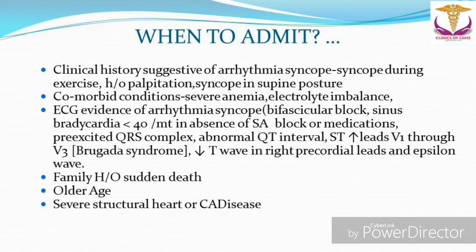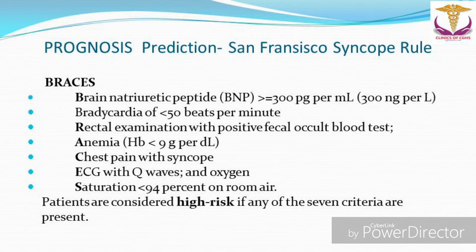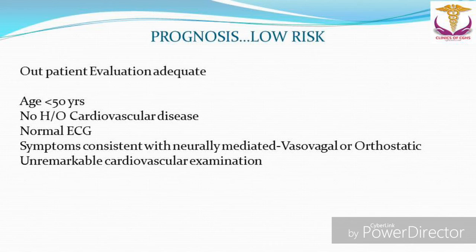Prognosis prediction also uses the San Francisco Syncope Rule, called BRACES: Brain natriuretic peptide more than 300 picograms per mL, Bradycardia less than 50 beats per minute, Rectal examination with positive fecal occult blood, Anemia with hemoglobin less than 9 grams per deciliter, Chest pain with syncope, ECG with Q waves, and oxygen Saturation less than 94% on room air. Patients are considered high risk if any of the seven criteria are present. For low risk patients, outpatient evaluation is adequate. Low risk is defined as age less than 50 years, no history of cardiovascular disease, normal ECG, symptoms consistent with vasovagal or orthostatic syncope, and a normal cardiovascular system.